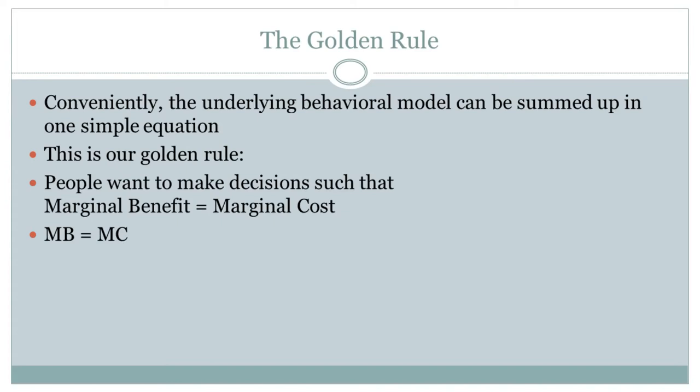Thankfully, there is a single rule that explains all of it — the golden rule of economics — and it is: marginal benefit equals marginal cost. Basically all of economics comes from this one simple rule, from what you're learning right now to doctoral dissertations being written around the world. Once you figure out what marginal benefit is and what marginal cost is, you just set them equal to each other, and that explains behavior in any kind of market — whether competitive or not — and even outside of markets.